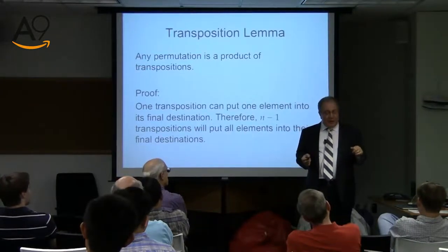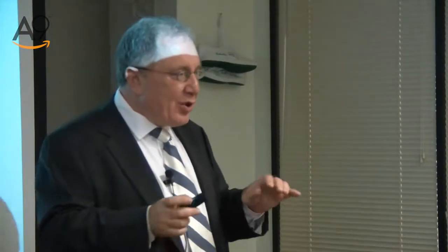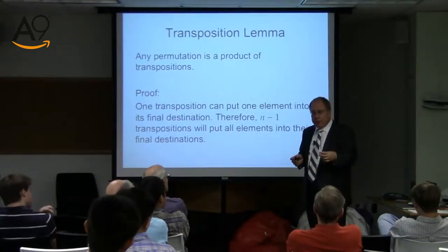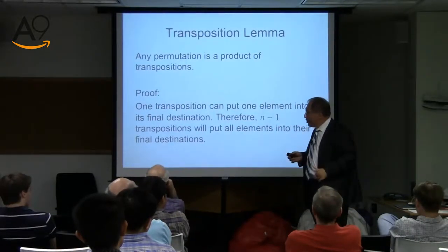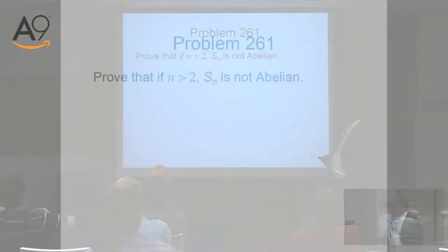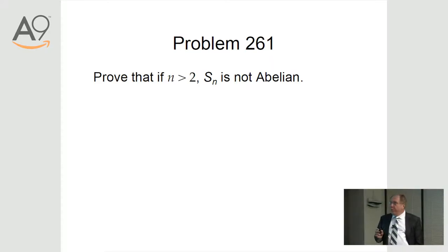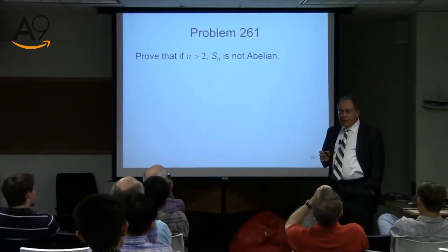I have to mention something. There is a notion of an even and odd permutation. An even permutation is a permutation which is a product of an even number of transpositions. Therefore you could have a subgroup of the symmetric group of all even permutations — because a product of two even permutations is an even permutation, which is not true for odd permutations. This is another very important group called the alternating group, denoted A sub N.